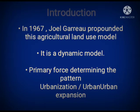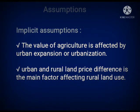Regularity and circularity will require uniform physical conditions and uniform rates of urban expansion. To describe the model, Garrio divided assumptions into two types: implicit assumptions and explicit assumptions.